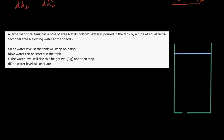Next, let's move to a really interesting question. There is a large cylindrical tank with a hole of area a at its bottom. Water is poured into this tank by a tube of equal cross-sectional area a, ejecting water at speed v. There are four options: (a) water level keeps rising, (b) no water can be stored, (c) water level rises to height v²/2g and then stops, (d) water level oscillates.